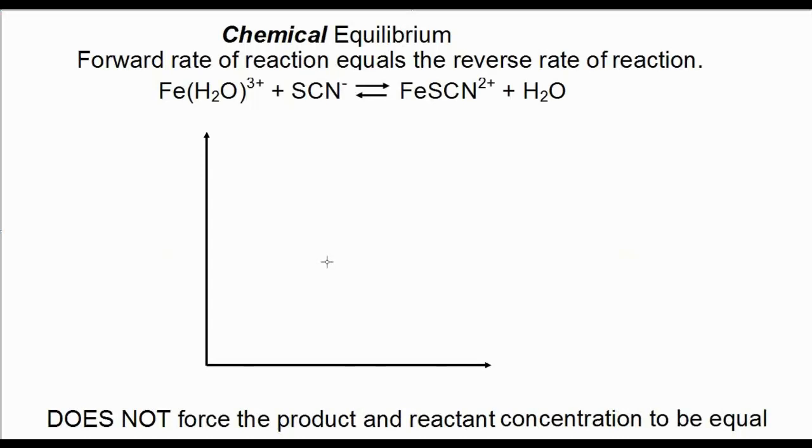I'd like to explain chemical equilibrium a little bit further, using a graph. I also want to emphasize that chemical equilibrium does not force the concentrations of the product and reactants to be equal. Here's the reaction between iron and thiocyanate to form that reddish complex iron thiocyanate. And below is a coordinate axis. Y axis I'm going to label as the concentration, and the x axis I'm going to label as time. Mark off beginning T0 and concentration of 0, and here I'm going to mark off 1, 1 molar concentration.